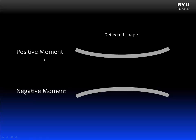Let me briefly summarize what we learned about deflected shape. When we have a positive moment in our beam, then the deflected shape will be concave upward — that means we will have compression on the top and tension on the bottom. When we have a negative moment in our beam, the deflected shape will be concave downward — that means we have tension on the top and compression on the bottom. One way you can remember this is that when you have a positive moment, the beam smiles at you. When you have a negative moment, the beam frowns at you.